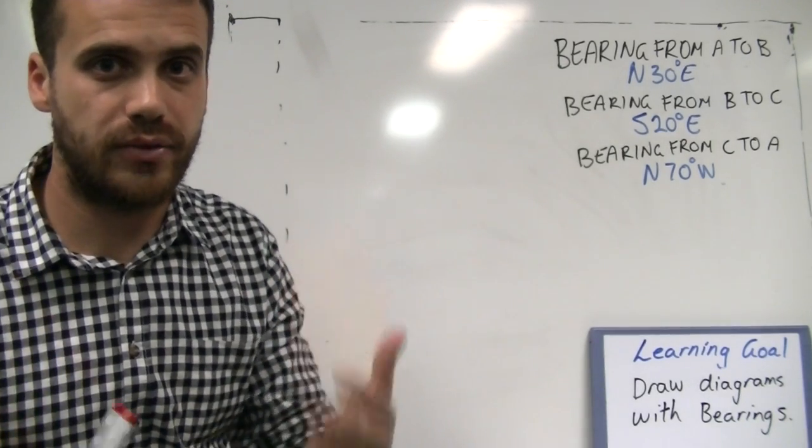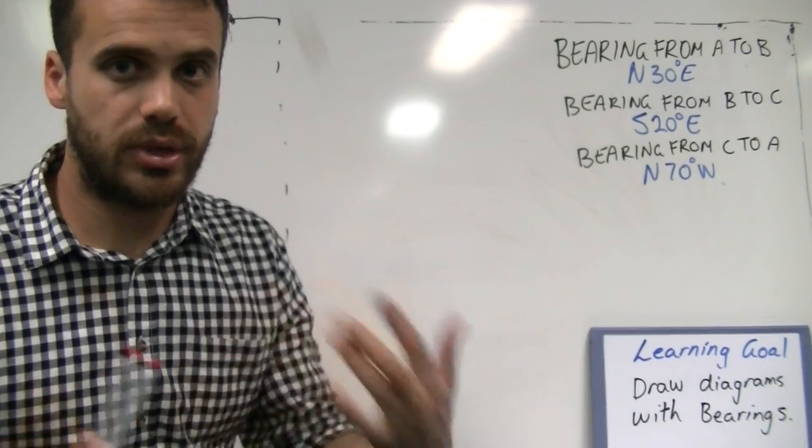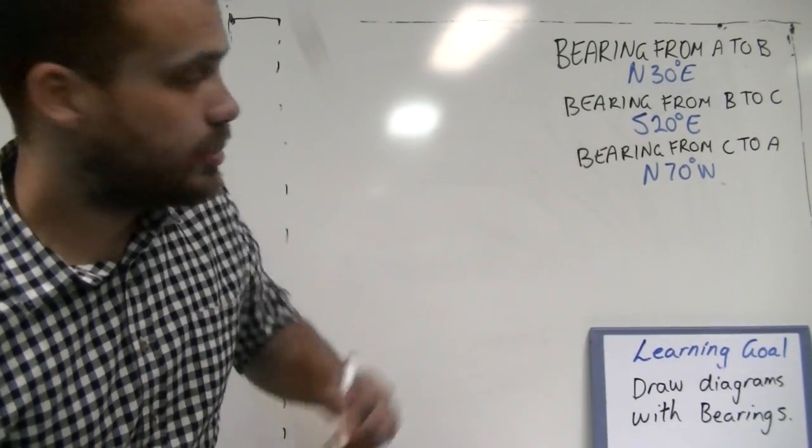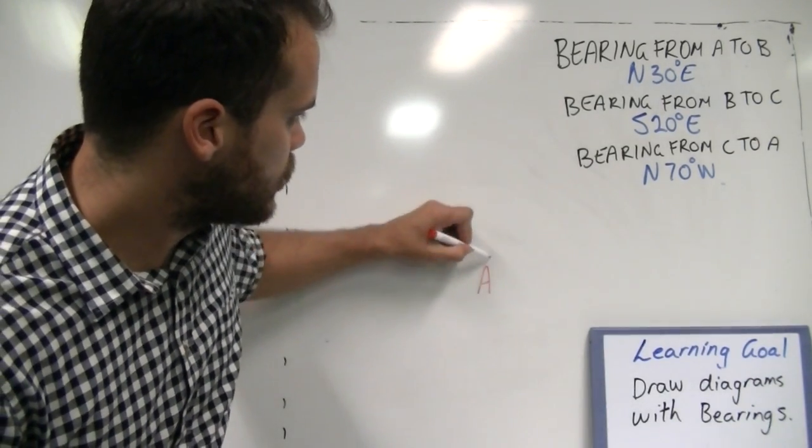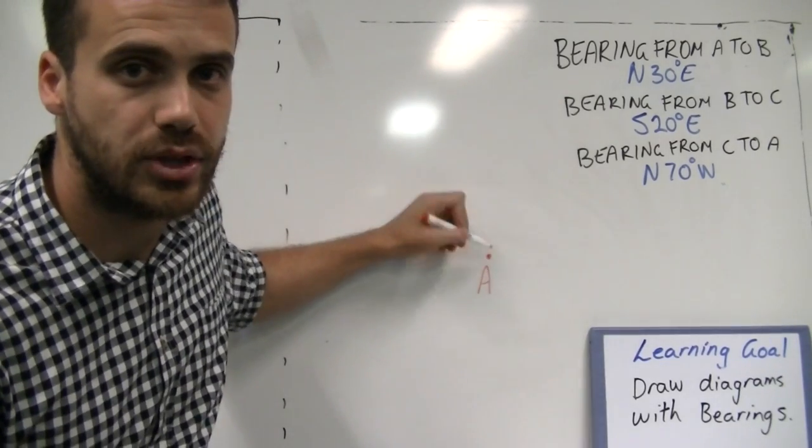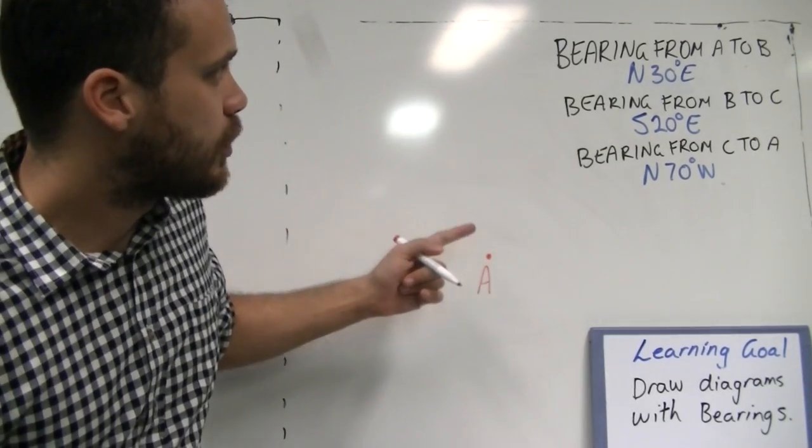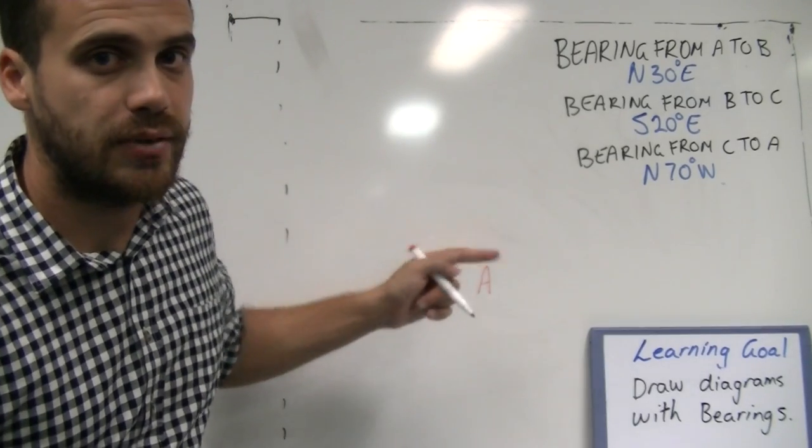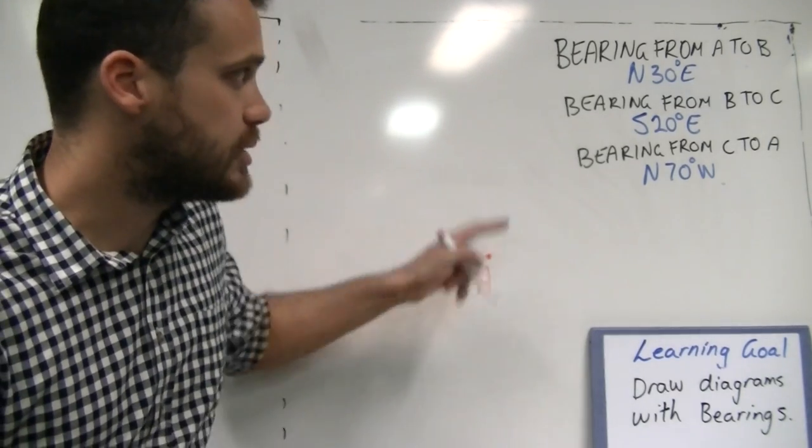Have a pencil, have an eraser, have a go at it. If it doesn't work the first time, go again. Let's take a look at person A. I'm just going to put him in the middle of my page so it makes it nice and easy. I can go in any direction there. From A to B. Be careful which direction this is. It's from A to B.